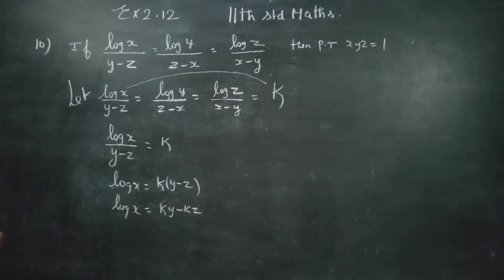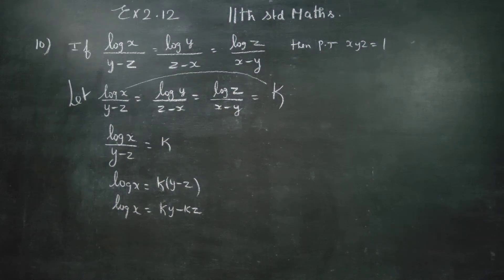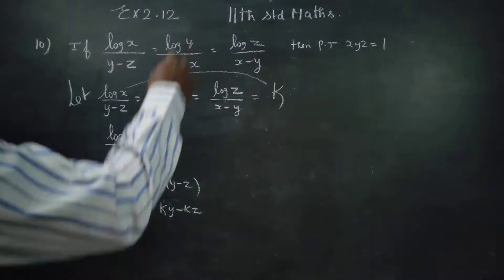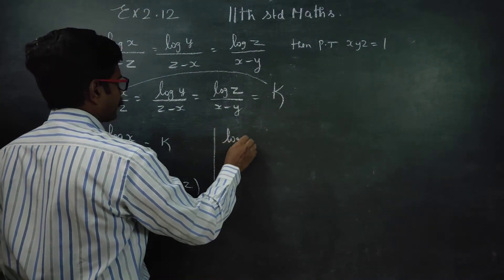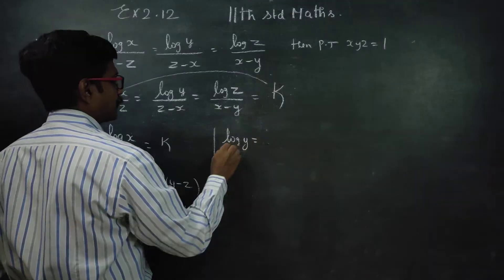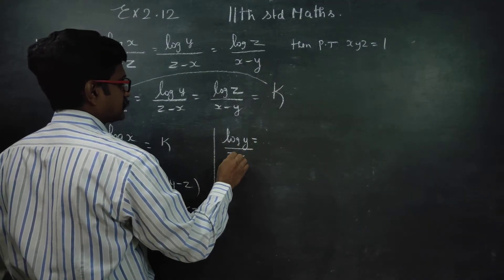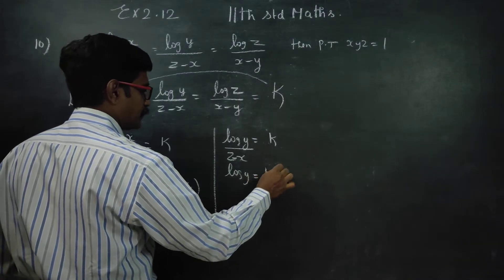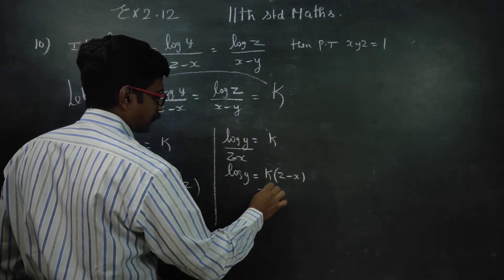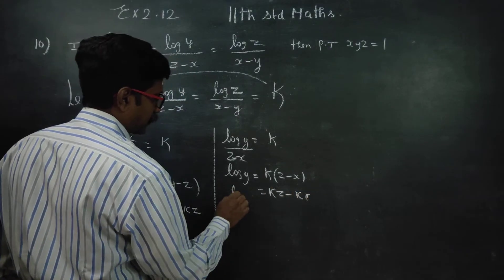Now, log y by (z minus x) is equal to k. Therefore log y is equal to k into (z minus x), which gives kz minus kx. This is my log y.